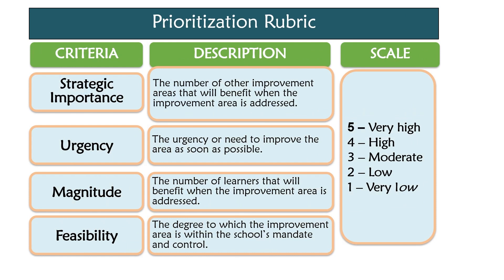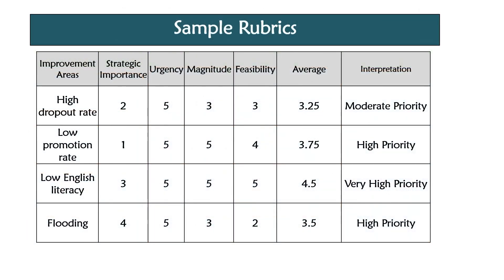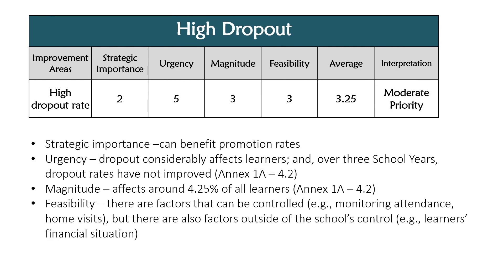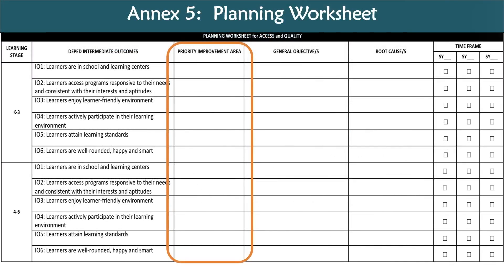You may use this prioritization rubric. Consider strategic importance — would this have a great impact? If this improves, would it benefit as many people as possible? Urgency — is it very urgent or needed to improve as soon as possible? Magnitude — the number of learners that will benefit when the improvement area is addressed. And feasibility — the degree to which the improvement area is within the school's mandate and control. You may rate them from 5 to 1, with 5 as very high and 1 as very low. In this example, the very high priority goes to low English literacy, while high dropout rate is a moderate priority.